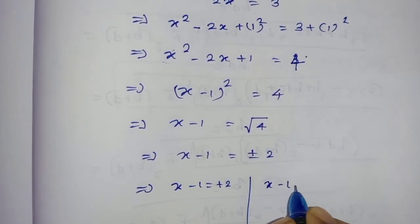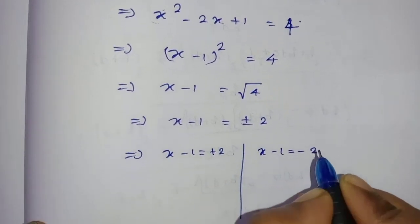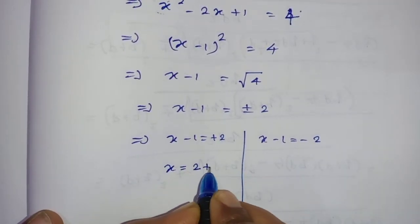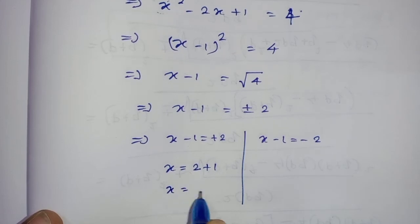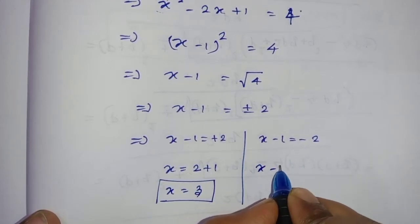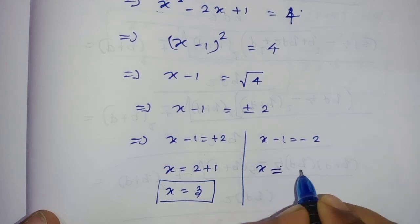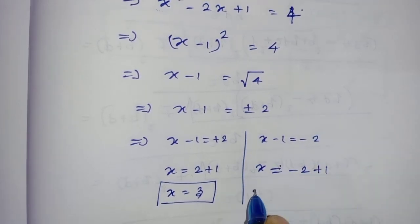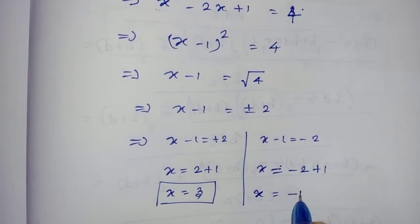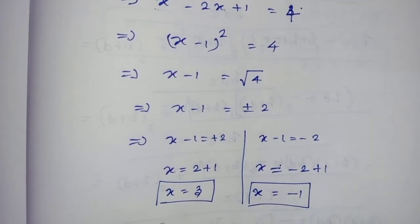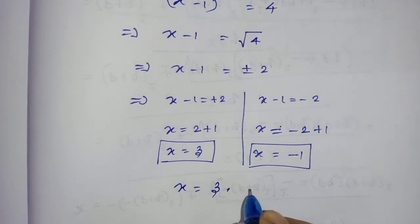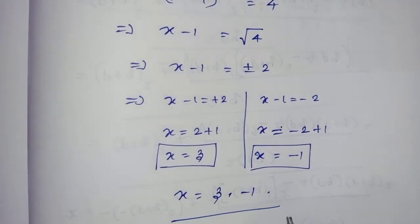For the positive case: x minus 1 equals plus 2, so x equals 2 plus 1 equals 3. For the negative case: x minus 1 equals minus 2, so x equals minus 2 plus 1 equals minus 1. Therefore x is equal to 3 or minus 1. This is the answer.